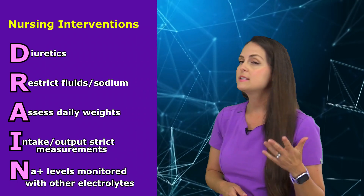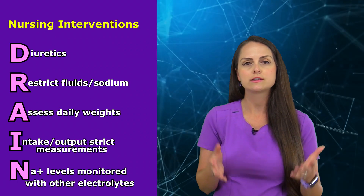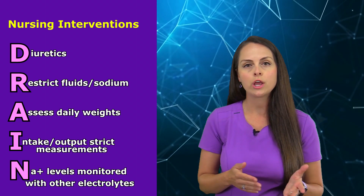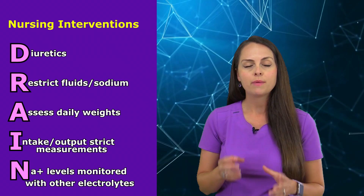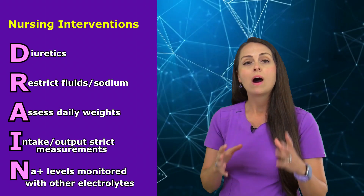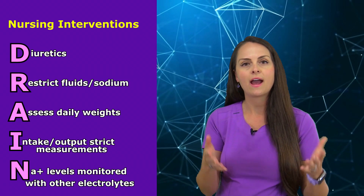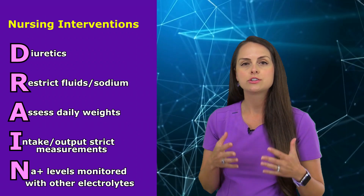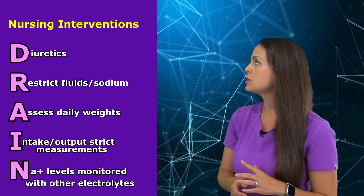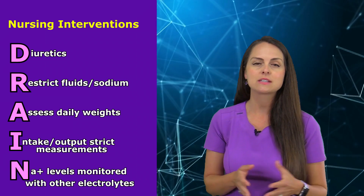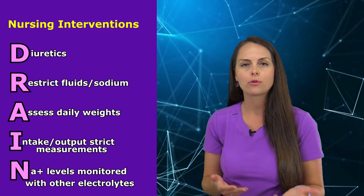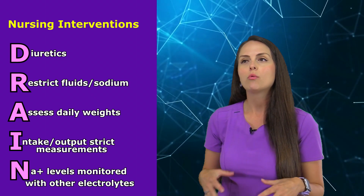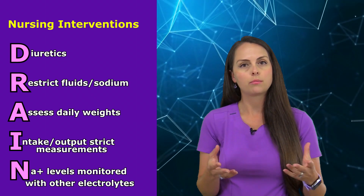R is for restrict fluids and sodium. We don't want to be giving this patient fluids because it counteracts what we're trying to do. They'll be on a fluid restriction of about one to two liters per day. Help patients develop a plan to space out their fluid intake throughout the day. Also restrict sodium foods — a low-sodium diet — because sodium loves water, and adding sodium just pulls more water and worsens the overload.